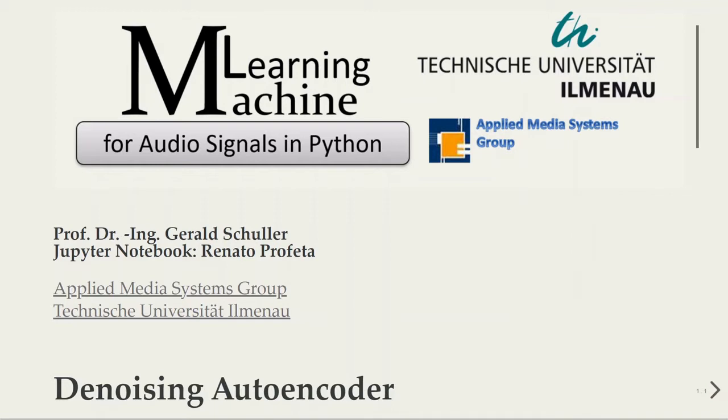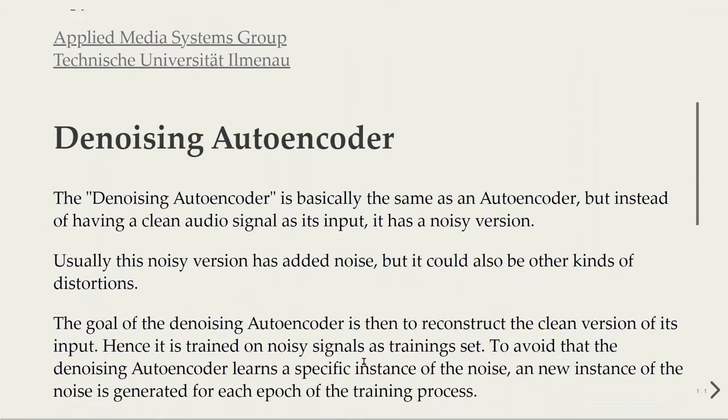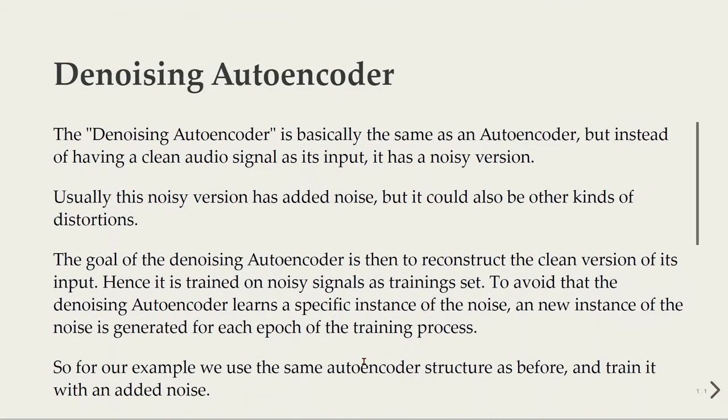In this tutorial we will talk about the denoising autoencoder. Basically, the denoising autoencoder is the same as an autoencoder, but instead of having a clean audio signal as its input, it has a noisy version. Usually this noisy version has added noise, but it could also be other kinds of distortions.